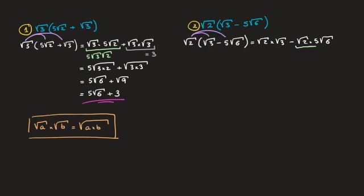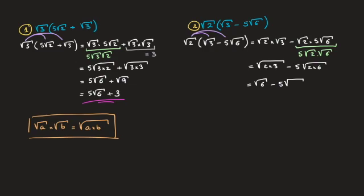Just as in the first example I change the order of the terms in the second product, giving 5 times √2 times √6. Using the boxed result I can state that this equals the square root of 2 times 3, minus 5 times the square root of 2 times 6, which is the square root of 6 minus 5 times the square root of 12.